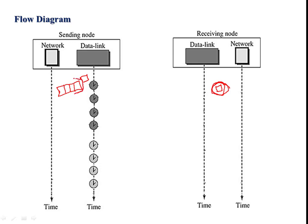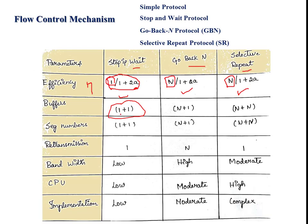In selective repeat, the sender window size is greater than one and the receiver window size is also equivalent to the sender window size. So in stop-and-wait, sender and receiver window sizes are both one. In go-back-N, sender window size is greater than one and receiver window size is one. But in selective repeat, both sender and receiver window sizes are greater than one and equivalent.